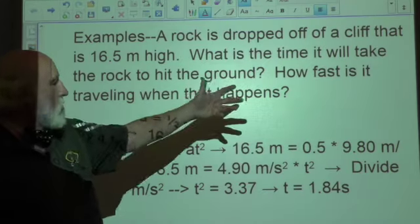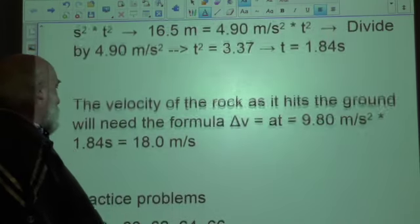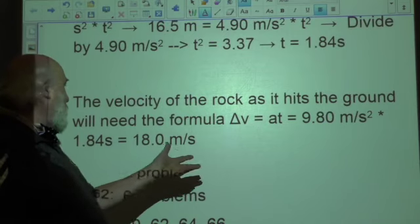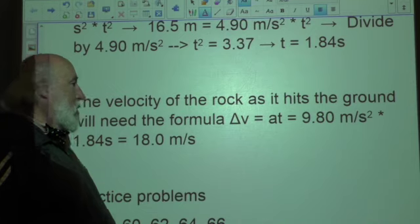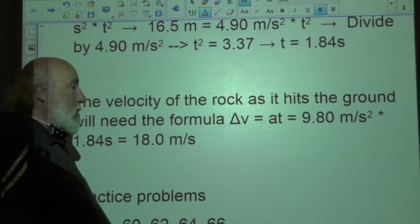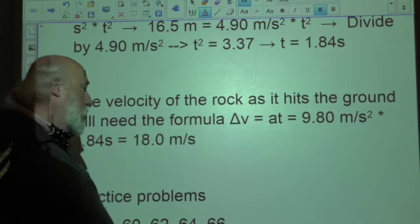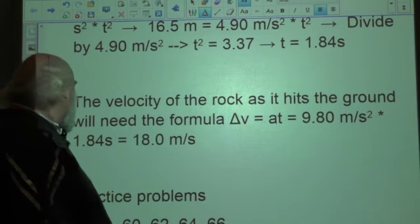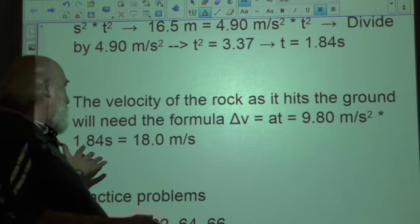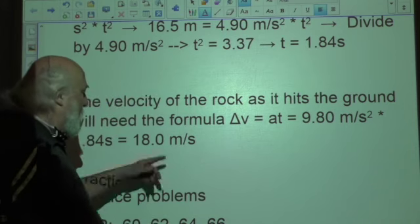Then the next question is how fast is it traveling when that happens? Well, again, we're going to use Δv = at. Because the initial velocity is zero, that drops out, and a is gravitational acceleration, so again, I could have used g there, but it's the same thing. 9.80 meters per second squared is the acceleration. 1.84 seconds is the time it drops, so we know that at the instant that rock hits the ground, the speed is going to be 18.0 meters per second.